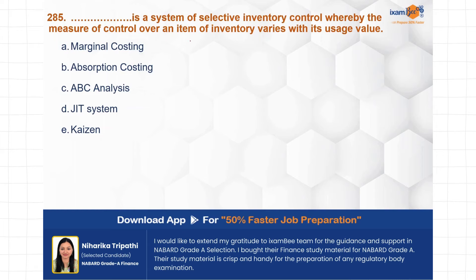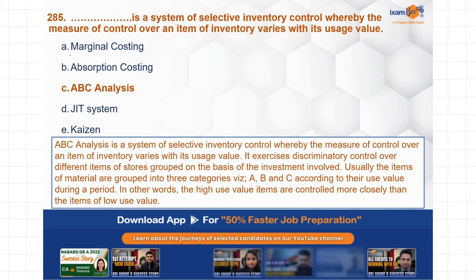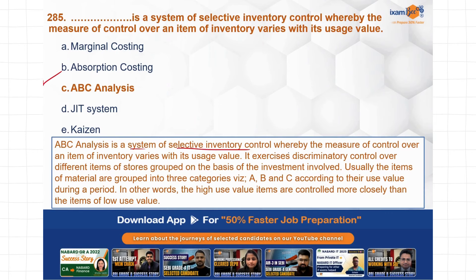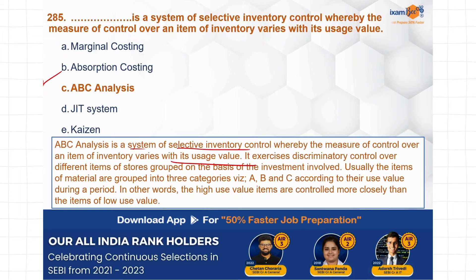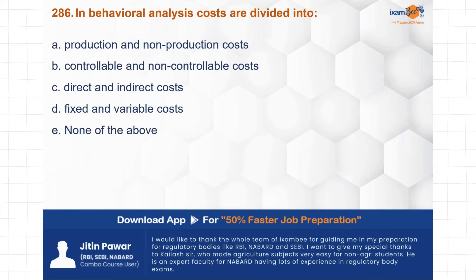Next question: dash is the system of selective inventory control whereby the measure of control over an item of inventory varies with the usage value. ABC Analysis is the correct choice here. ABC Analysis is the system of selective inventory control whereby the measure of control over an item of inventory varies with its usage value. C is the correct choice.